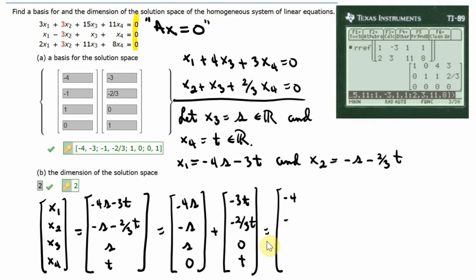This is negative 4, negative 1, 1, 0 times S, plus negative 3, negative two-thirds, 0, 1 times T.